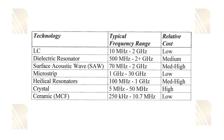SAW filters — surface acoustic filters — operate from 70 MHz to the GHz range, and cost increases here. Microstrip filters can operate up to 30 GHz and the cost is low, making them one of the best and most important filter options available.